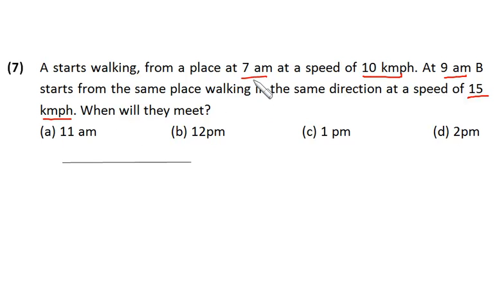Now A is starting at 7 a.m. and B is starting at 9 a.m. That means before B starts, A might have run for 2 hours and his speed is 10 km per hour. That means in 2 hours he might have run for 20 km.